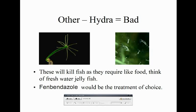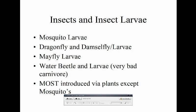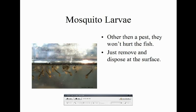Insects and insect larvae we'll cover include mosquitoes, dragonflies, damselflies, mayflies, and water beetles. Most are introduced via plants, except mosquitoes which can land in your aquarium at home since there's no chlorine. Mosquito larvae won't really hurt anything — they stay at the top of the water with their little fangs. Just scoop them out with a net.